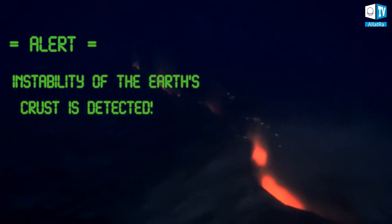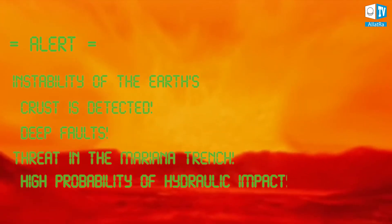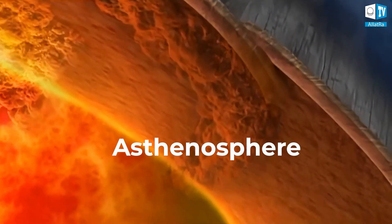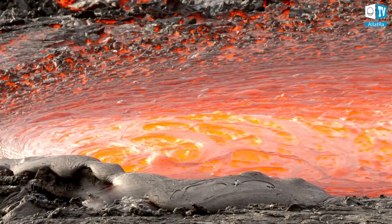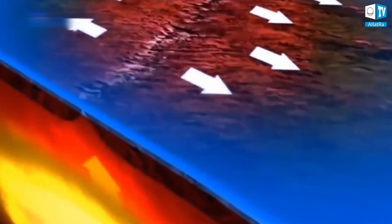Instability of the Earth's crust is detected. Deep faults. Threat in the Mariana Trench. High probability of hydraulic impact. The top layer of the mantle is called the asthenosphere. It's the layer where rocks now melt, now cool and solidify. The substance of the asthenosphere is more plastic and serves as the lubricant on which the entire Earth's crust slides.